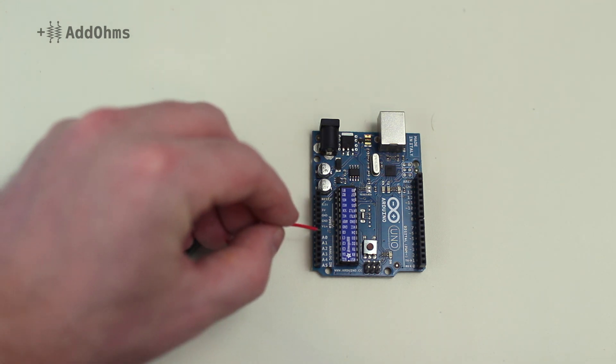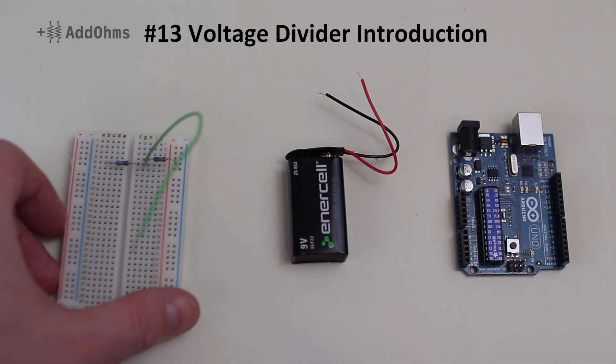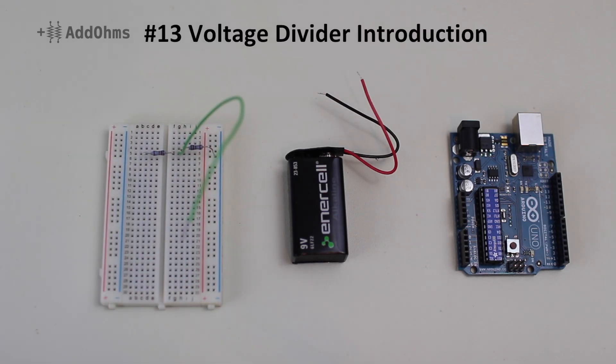Alright, so you're working on a project and you want to measure a battery, say like this 9-volt battery. Well, if you're using something like an Arduino, such as this one, you can't simply put the 9-volt directly into an analog in, you'll blow it. So what can you do? Well, you can use two resistors as a voltage divider, which is what we're going to talk about in this AddOhms video.